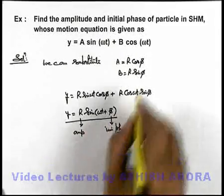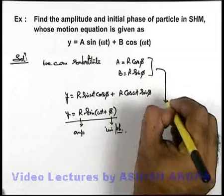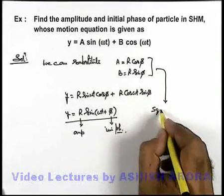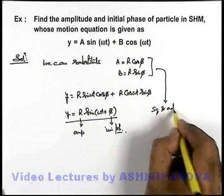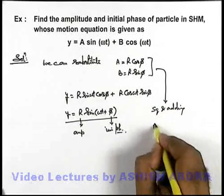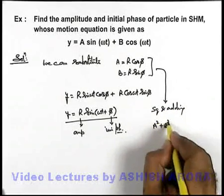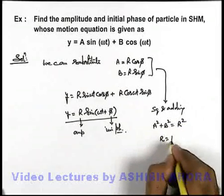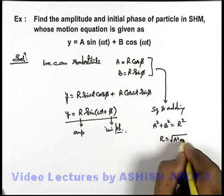In this situation, the value of R and φ we can obtain from these relations. If we square and add these equations, squaring and adding, you can see we'll get A² + B² = R².